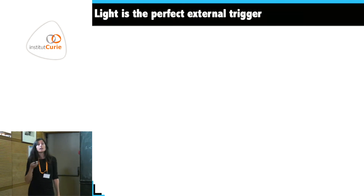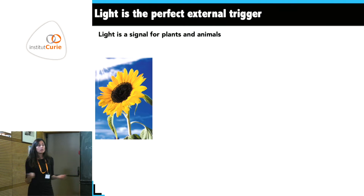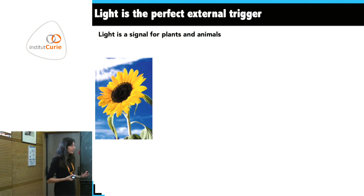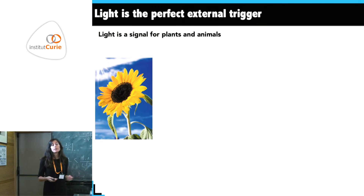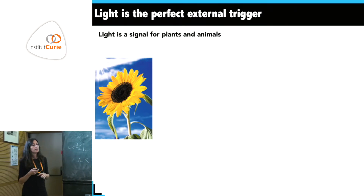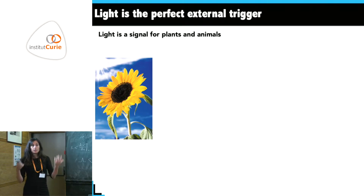We think there is a better trigger than any of that, and this is light. Light is of course critical to life on our planet — plants use it to grow toward the light source, and as humans we have our circadian clock, being active during the day and sleeping at night.